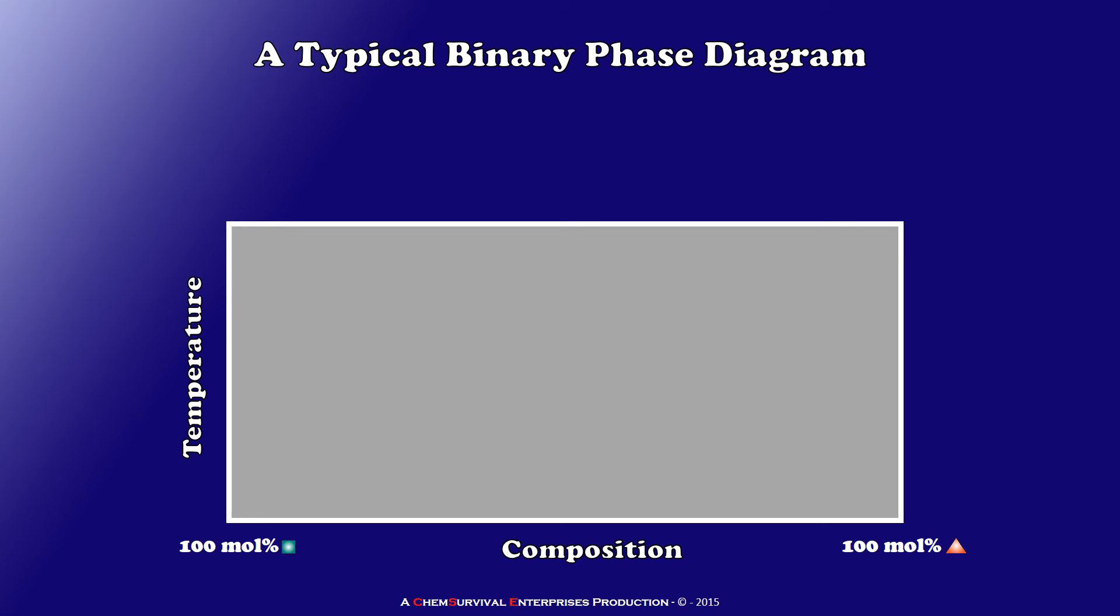To construct our binary phase diagram we'll start with a pure material. Let's begin with our green square compound here. If I'm interested in the melting point of that pure compound I can find it at the extreme left-hand side of my phase diagram. Because it's pure we expect there to be only one single temperature at which solid and liquid can coexist. So as I heat a sample of this compound I simply heat solid until I reach the melting temperature. The melting transition then takes place at that temperature and once it is complete then I begin heating my liquid.